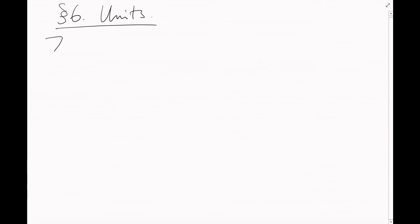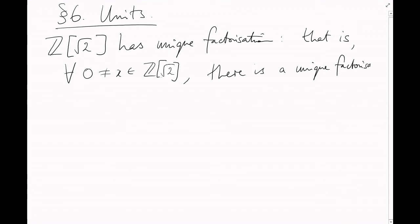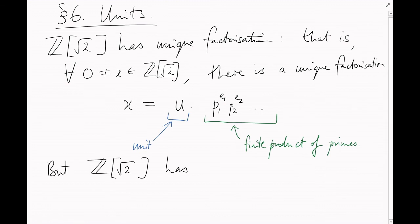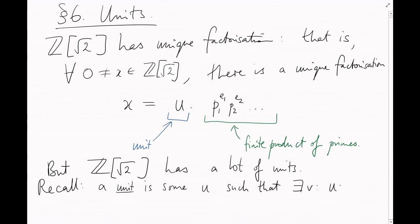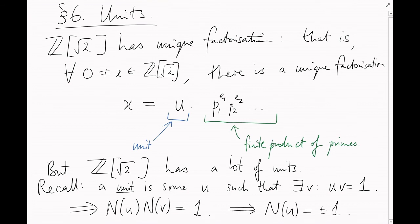Here's one final remark. We've shown that Z root 2 has unique factorization. That means all elements factorize uniquely into units and prime elements. But we also saw a few videos ago that Z adjoin root 2 seems to have a lot of units. And our picture kind of explains why. Remember that a unit of a ring r is some element u with a multiplicative inverse. That is, some v such that u times v equals 1. Now, taking norms of both sides implies the norm of u times the norm of v is 1. And so, as norms are always integers, the norm of u must be plus or minus 1. I haven't proved it, but this is actually an if and only if.